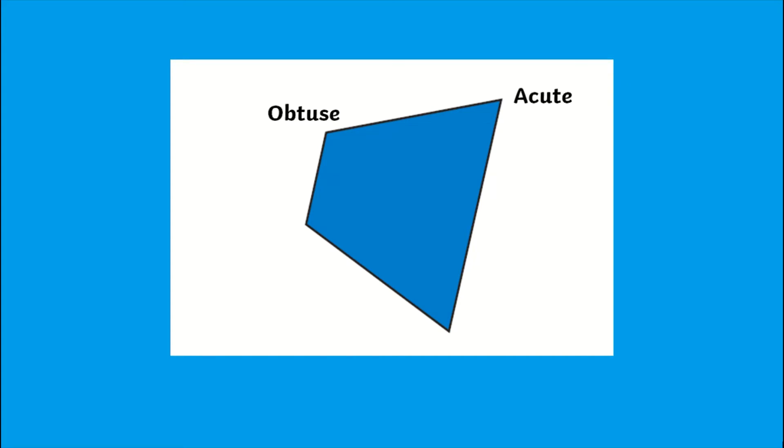This would be a good activity to help children visually see the types of angles within the shape and to see why the shape is either a concave or convex shape.